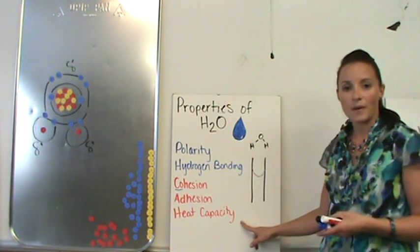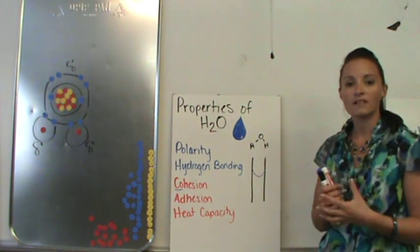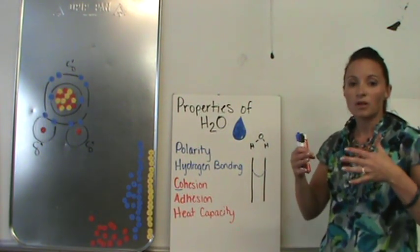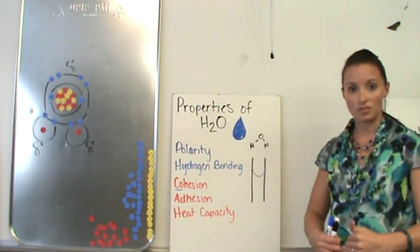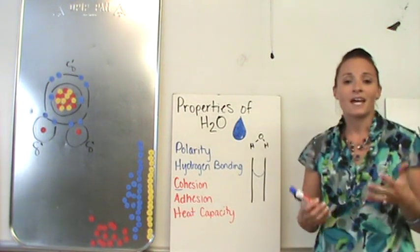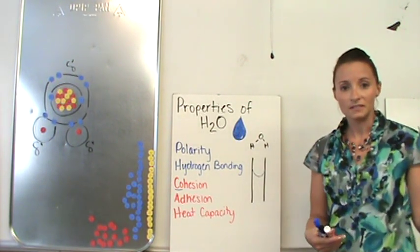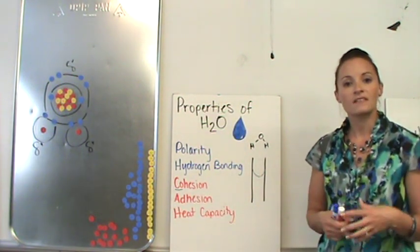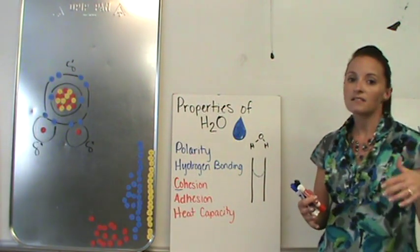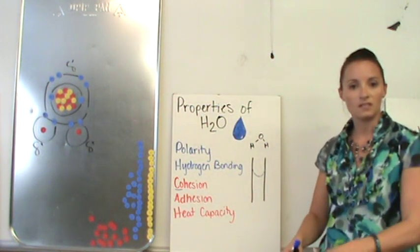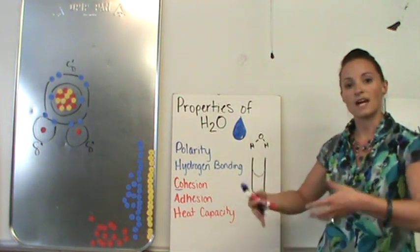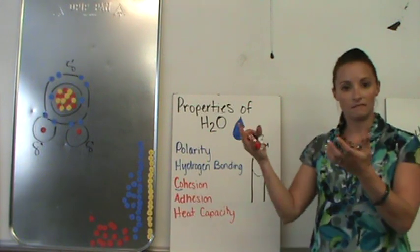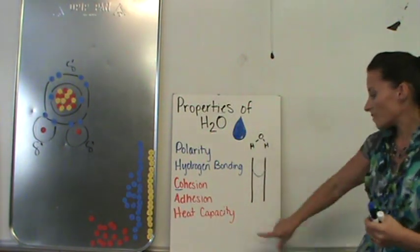A third property is called heat capacity. Now, heat capacity is where water actually takes a lot of energy to increase the temperature of water. Or a lot of energy to release, to decrease the temperature of the water. Now, think about on a hot summer day when you're out at the ocean. It's a lot cooler. It feels a lot cooler out in the ocean than it does out in the city. And the reason that is, is because the water is absorbing so much heat and it's not increasing in temperature as much as the surface of the ground. And so the ground surface actually releases a lot of that heat a lot quicker. And the water stays cooler and the city increases its temperature a lot quicker. So heat capacity is another one.